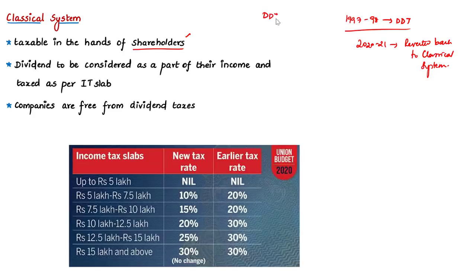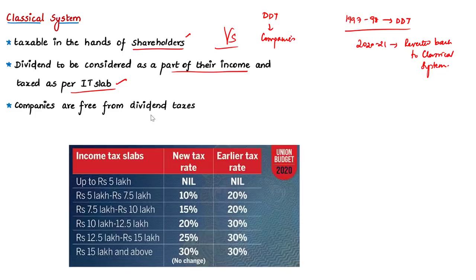In the classical system, the dividend received by the investor is considered as part of their income and taxed as per the appropriate income tax slab. So companies are now free from paying taxes on dividend. The income tax slab rates are given here for your reference.